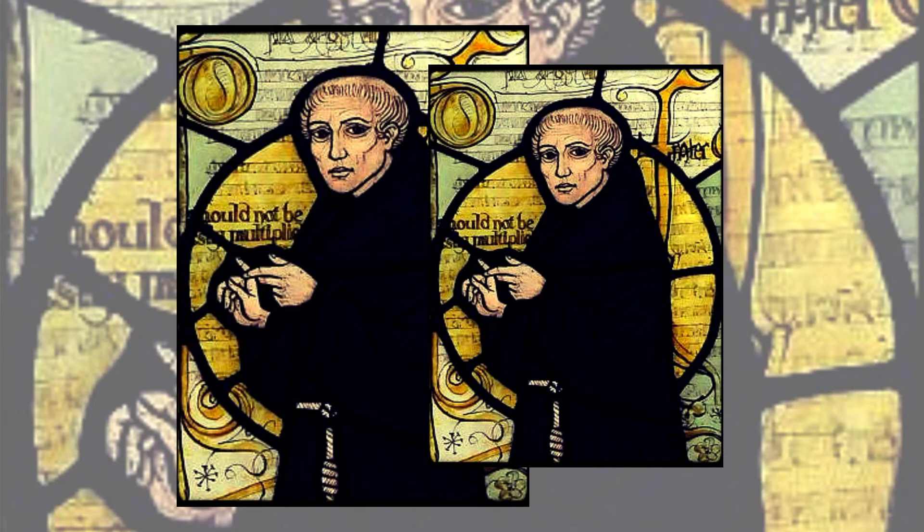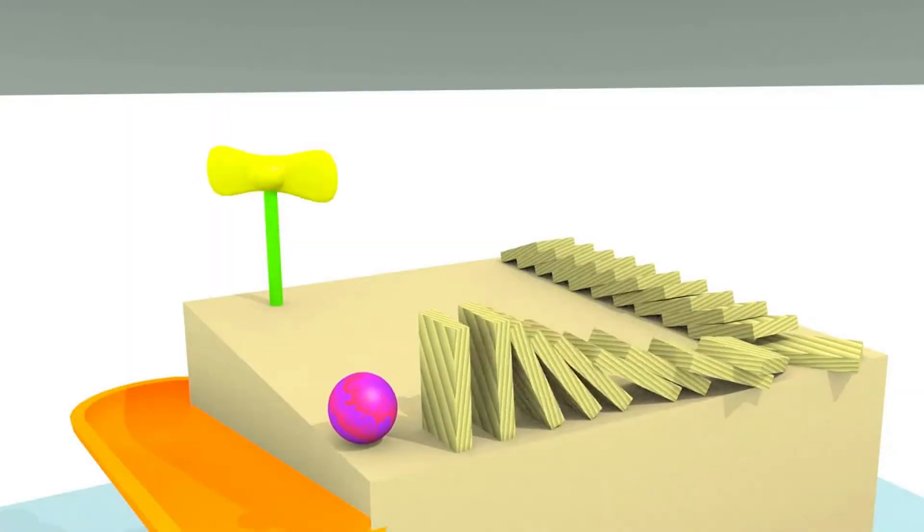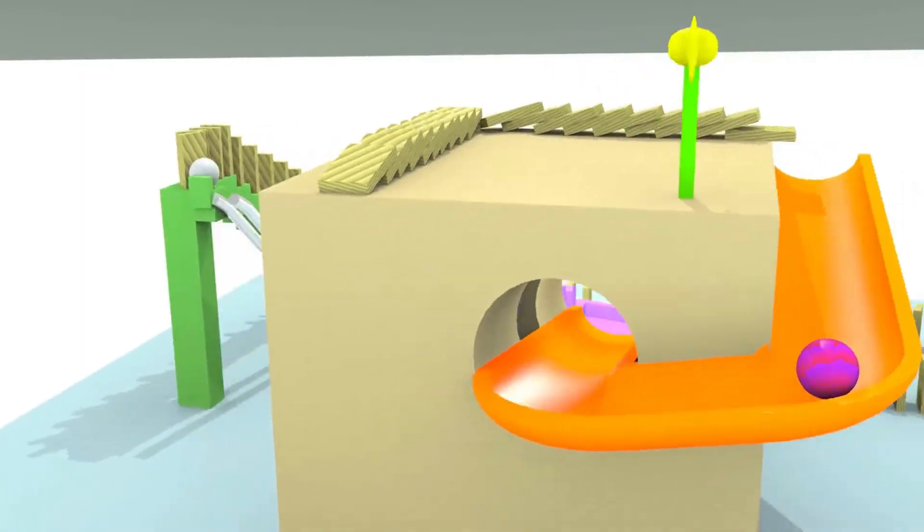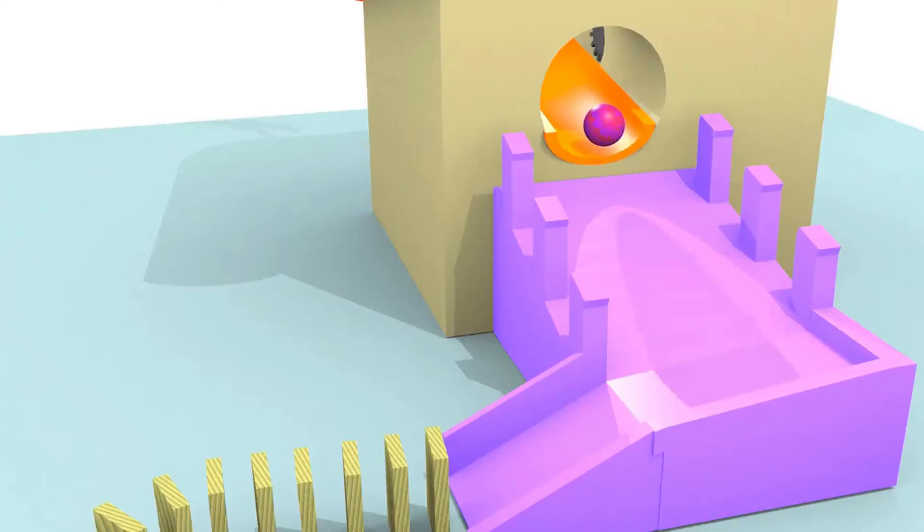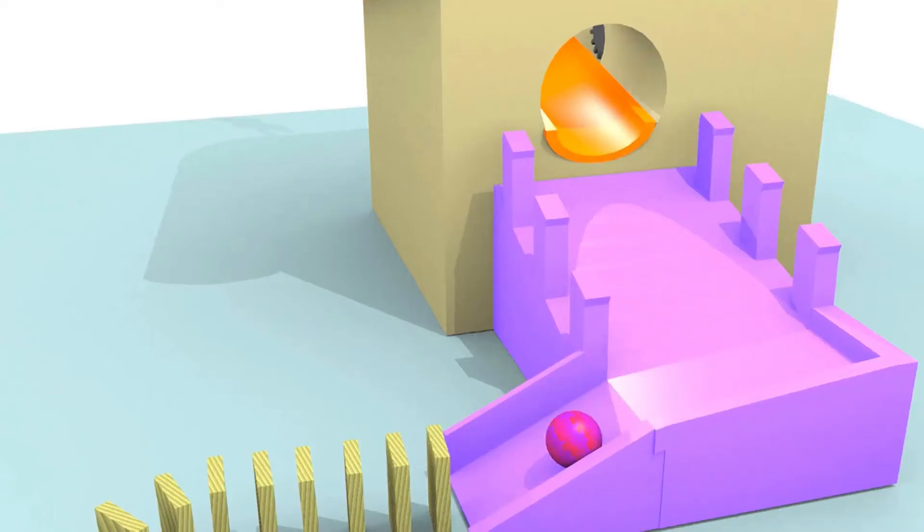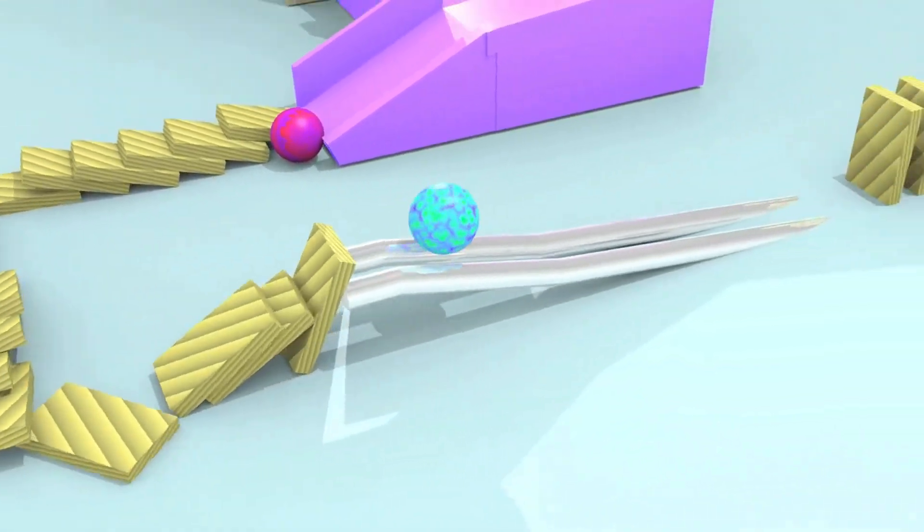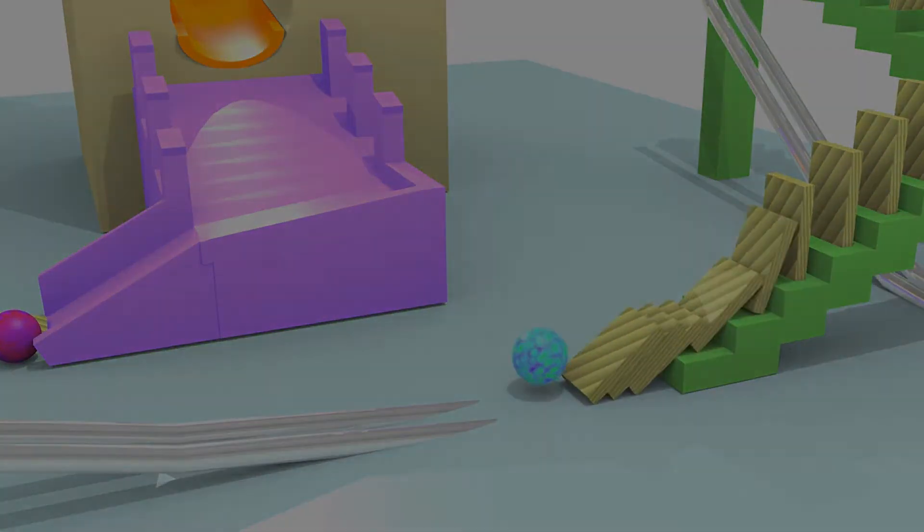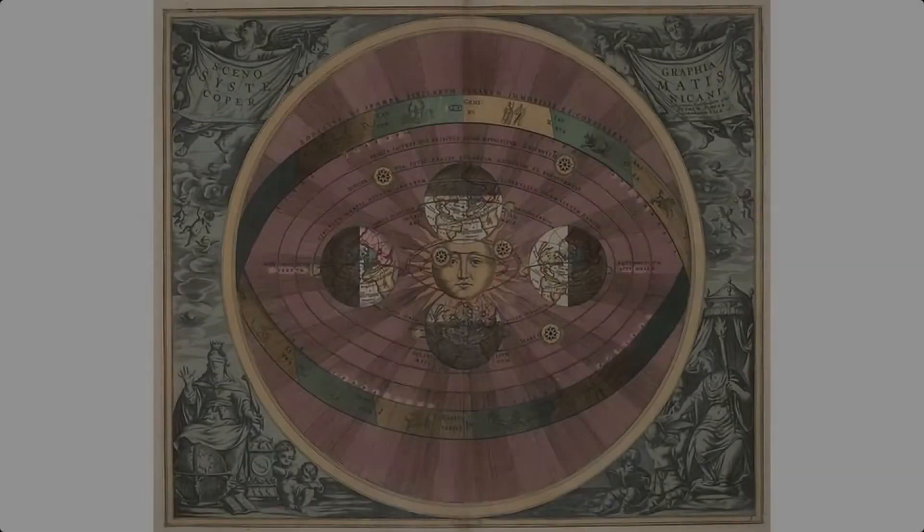He kept thinking about a problem related to finding arguments to rule out explanations of the type of a Rube-Goldberg machine, that is, overcomplicated explanations for even the simplest phenomena. We know today his argument as Ockham's razor, also known as the law of parsimony. Ockham's razor establishes that when presented with competing models, one should select the one that makes the fewest assumptions.